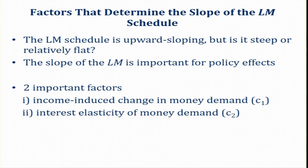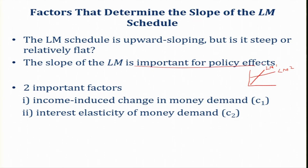The factors that determine the slope of the LM schedule are c1 and c2. The LM schedule is upward sloping, but the question is whether it is steep or relatively flat. The slope of the LM is important for policy effects. In subsequent sessions we will discuss why the slope of the LM is important for macroeconomic policy.